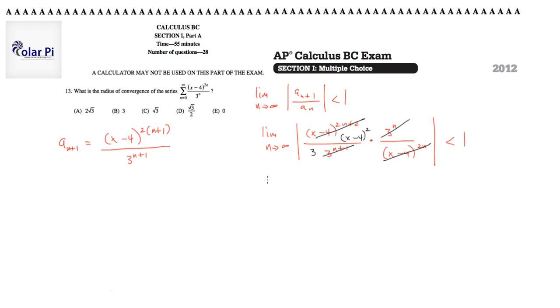Cool. So we should write limit as n goes to infinity, and then it should be absolute value of x minus 4 squared over 3, and we need to solve for that to be less than 1.